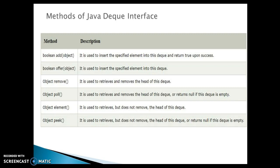The element method is used to retrieve but does not remove the head of the Deque. The peek method similarly retrieves but does not remove the head of the Deque, and returns null if the Deque is empty. These are a few key methods — for the rest of the methods you can look into the Deque interface as well as the ArrayDeque class.